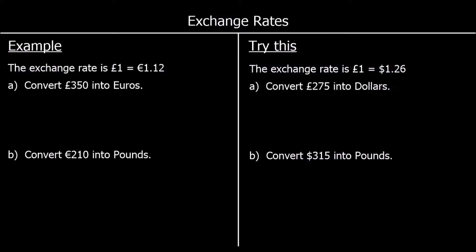We use exchange rates to convert money between different currencies. In this first question, we're told the exchange rate is one pound is equal to one euro and twelve cents. So one pound is worth the same as one euro and twelve cents.